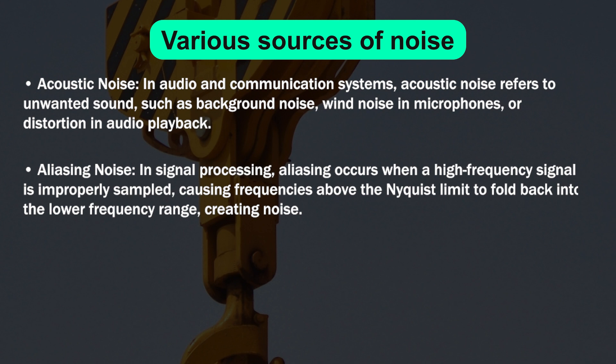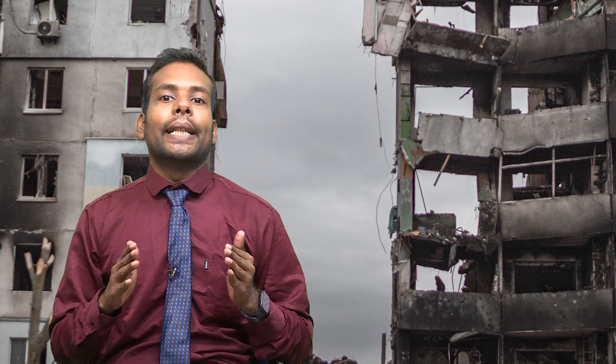The next point is jitter. Jitter is the variability in the timing of signal edges in digital data transmission, which can cause data errors and affect communication quality. These are just some examples of noise sources in various domains. Noise reduction and mitigation techniques are often employed to minimize the impact of noise in electronic circuits, communication, audio systems, and other applications.